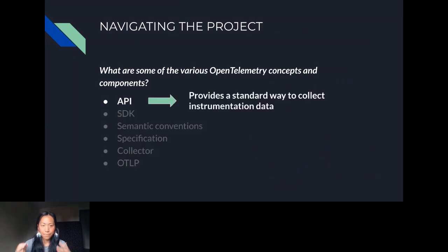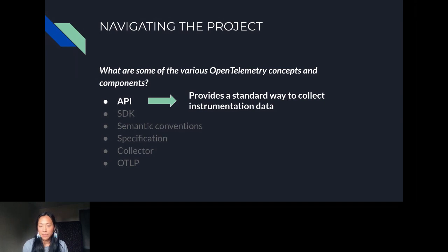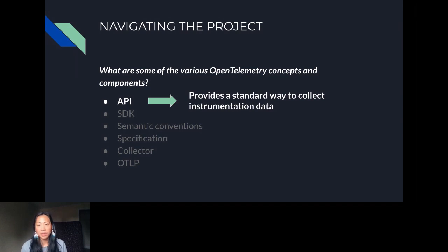The OpenTelemetry API provides a standard way to collect instrumentation data. It's used by app developers and library authors to instrument their code and generate telemetry data. The API defines the interface with which you work with data, but it requires an implementation — that implementation defaults to a no-op provider, meaning it effectively does nothing. This minimal implementation has very low overhead and no side effects. Without an SDK loaded, API calls simply become no-ops — so an SDK has to be loaded for us to use the API.